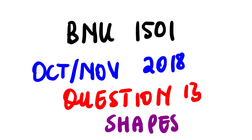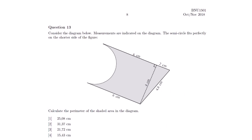Today's lesson will be looking at BNU 1501. The topic for today is shapes, and the question is extracted from October/November 2018, focused on question 13. These questions are selected based on the number of students having trouble answering them, or upon request. If you can request any question to be addressed through these lesson videos, I can do it for you.